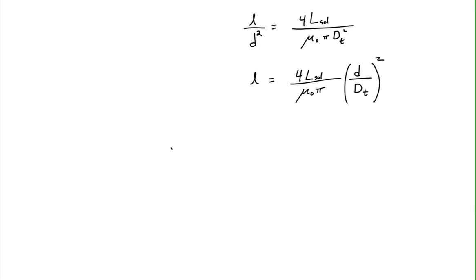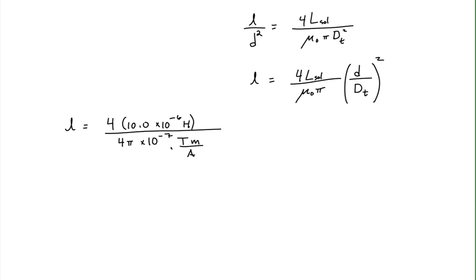Let's plug in our values. The length equals 4 times the inductance — 10.0 × 10⁻⁶ henries — divided by the permeability of free space, 4π × 10⁻⁷ tesla·meters per amp, multiplied by the ratio of wire diameter to tube diameter: (0.30 mm / 4.0 mm)², that quantity squared.